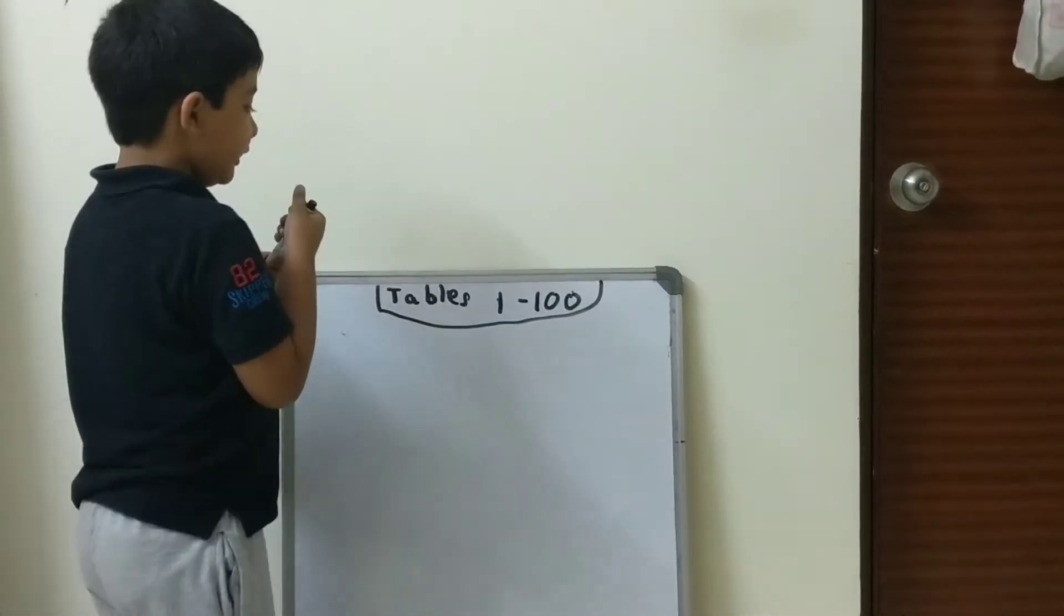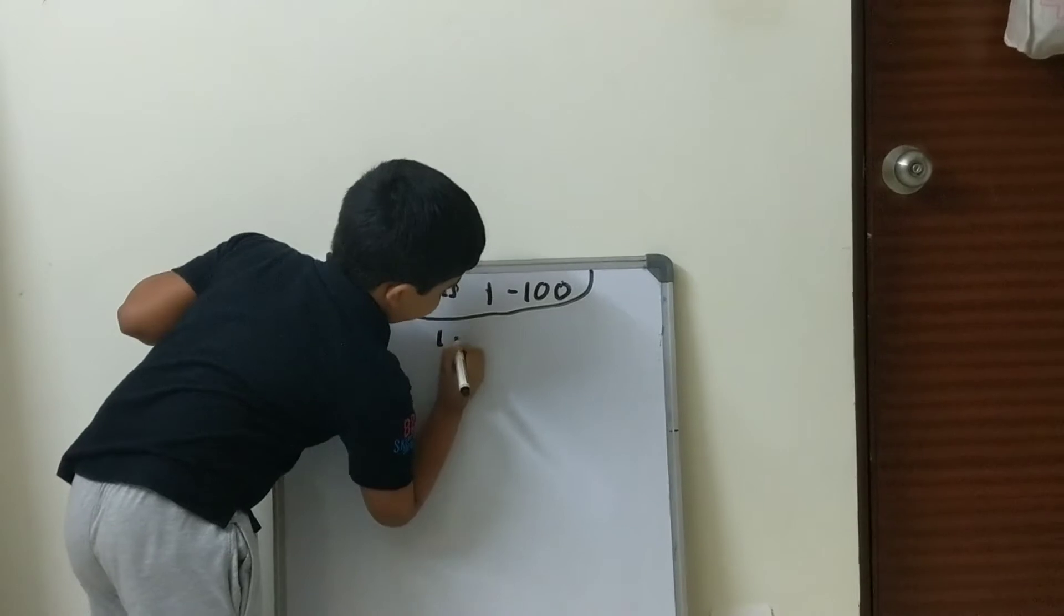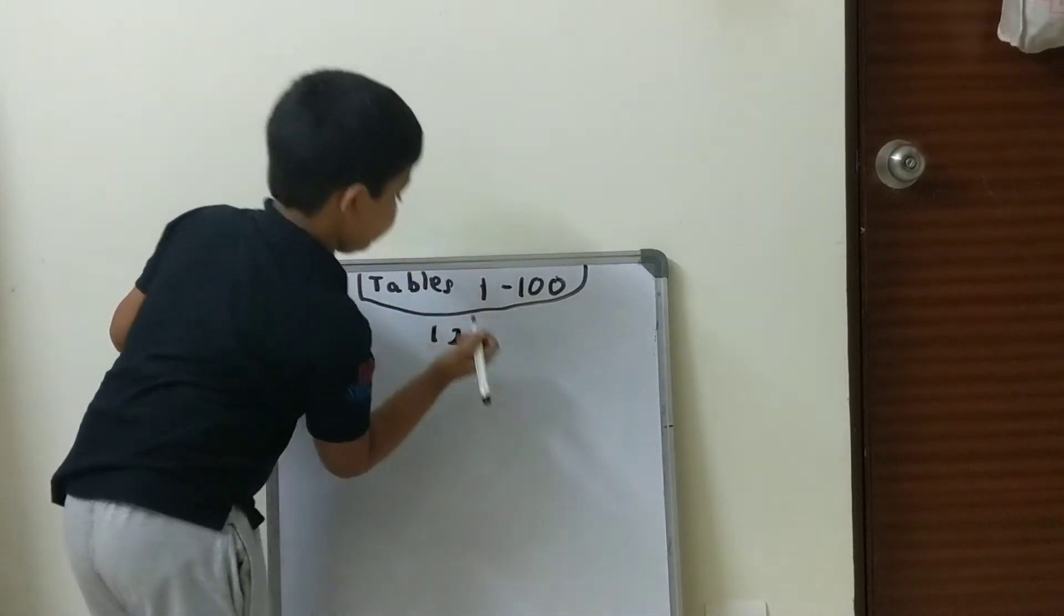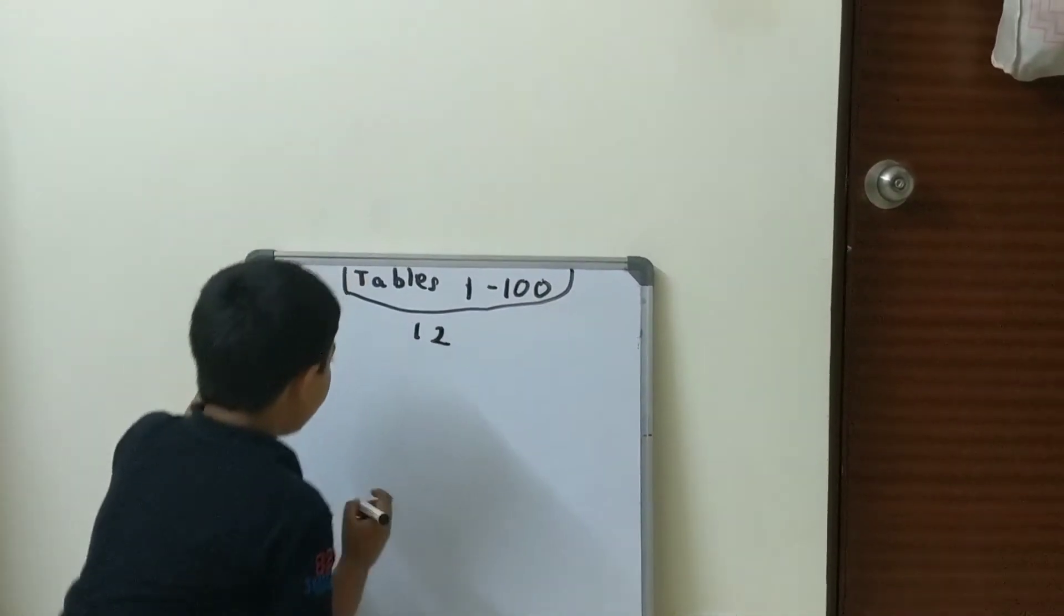Suppose we are doing 12 times table. So, do the 1 times table.